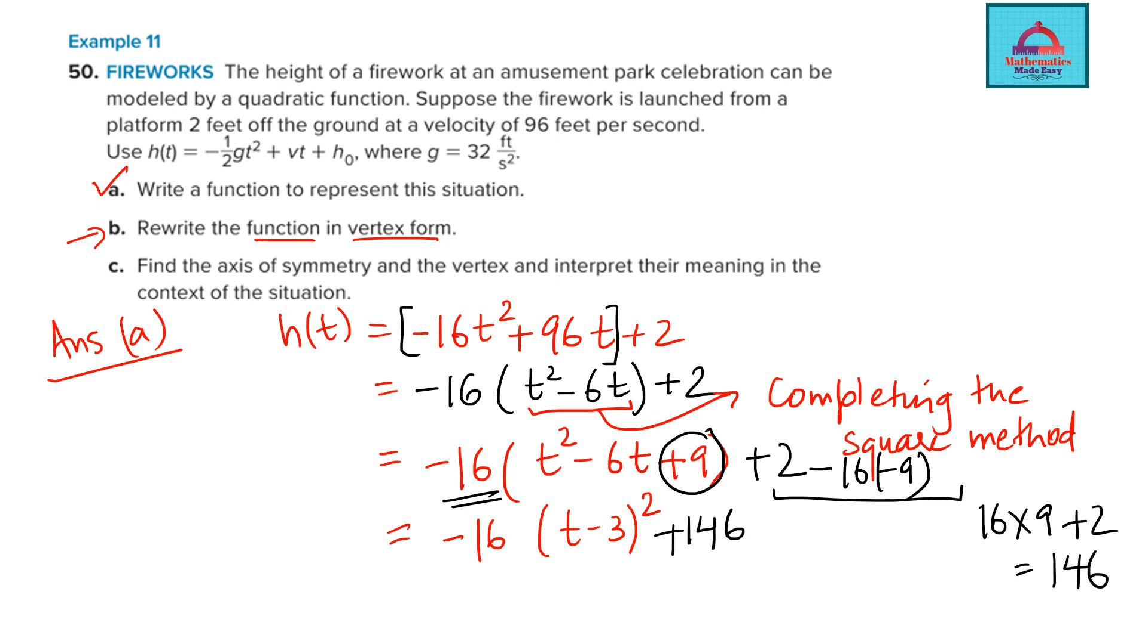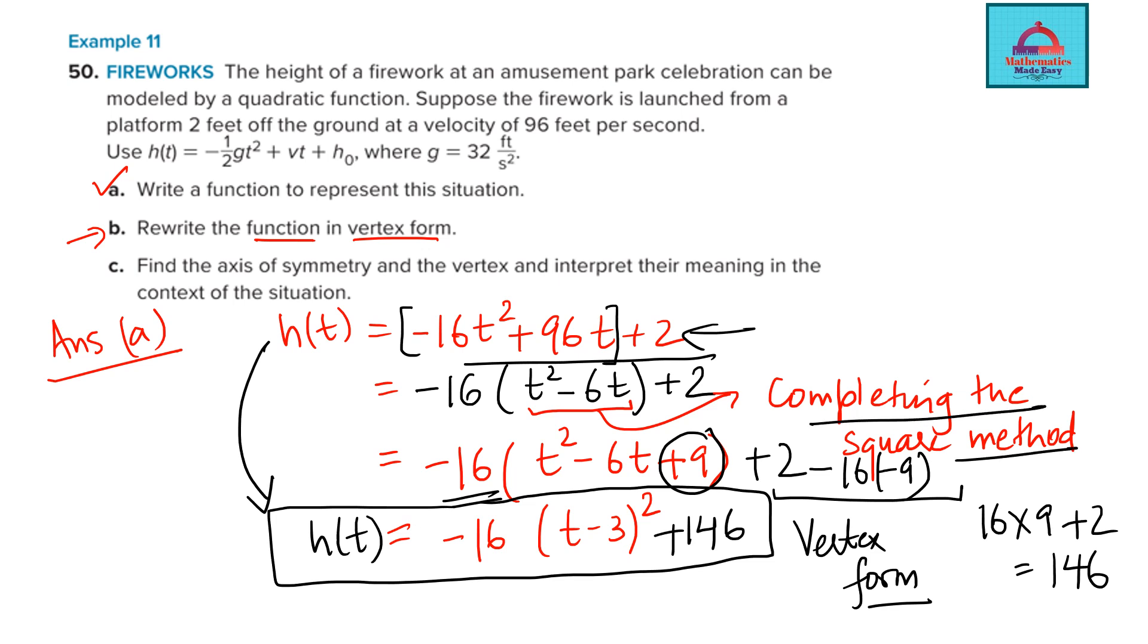This is 16 multiplied with 9 plus 2 and on your calculator, this will come out to be 146. So that's this number and therefore now in part B of the question, we have converted the function h(t) from what was given in part A, this one to this form. And this is the vertex form. And which method did we use? We used completing the square method to write it in this form.